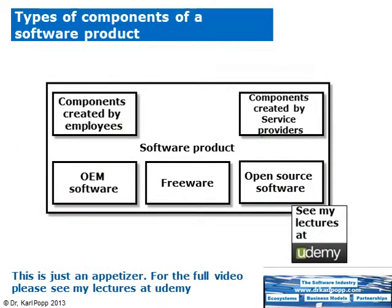Looking at products from many different software vendors, there are basically always the same types of components found in software products. First, components created by employees of the software vendor; then components created by service providers or freelancers that are part of the software product shipped to the customer. We also have OEM software — commercial software for which a commercial license is held to be included in the product. Then we have freeware, which is similar to OEM but without a license fee.